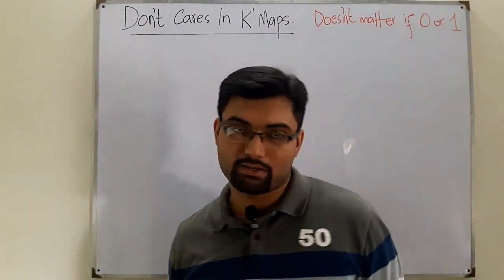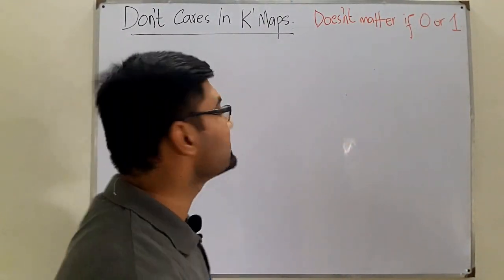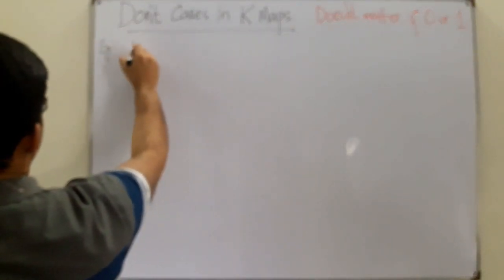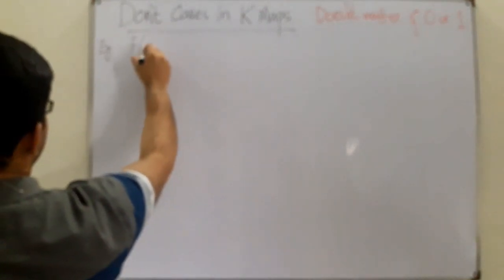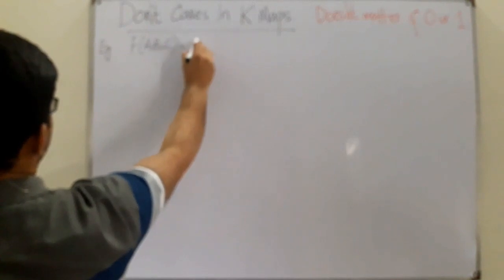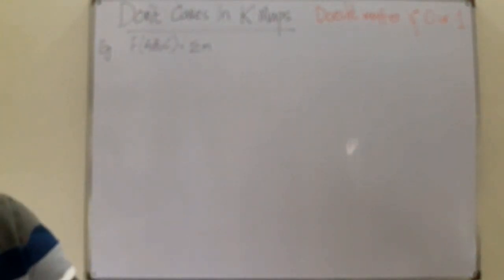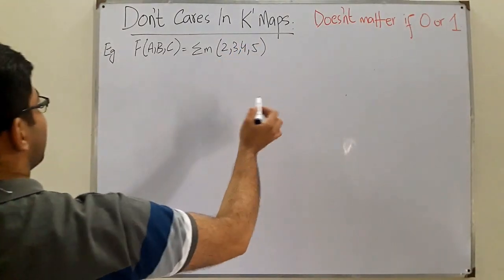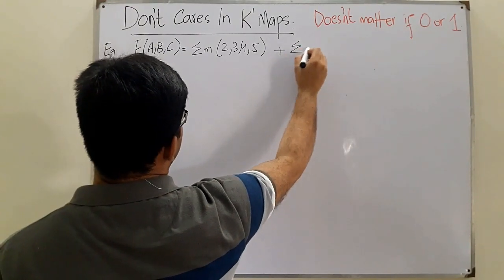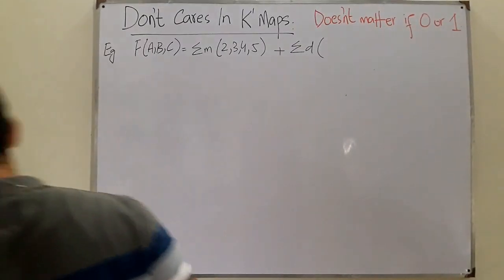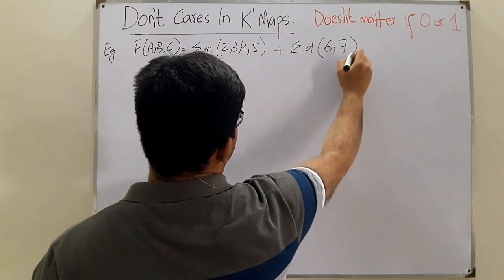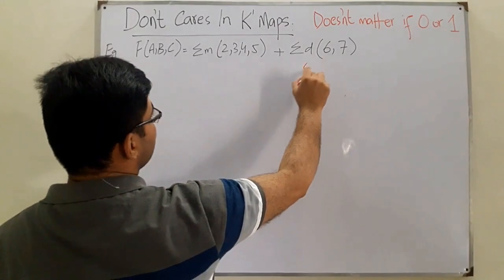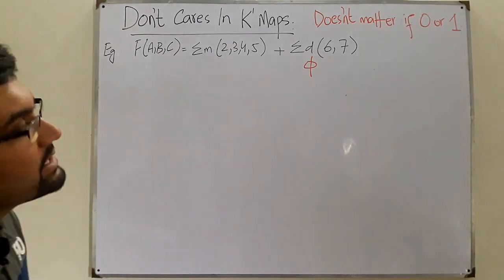Let's take a simple example. We have a three-variable function F(a, b, c) with minterms 2, 3, 4, 5, plus the don't cares at 6 and 7. This 'd' represents the don't care, and it can also be represented by the symbol phi. So you can represent it by a 'd' or by a phi.